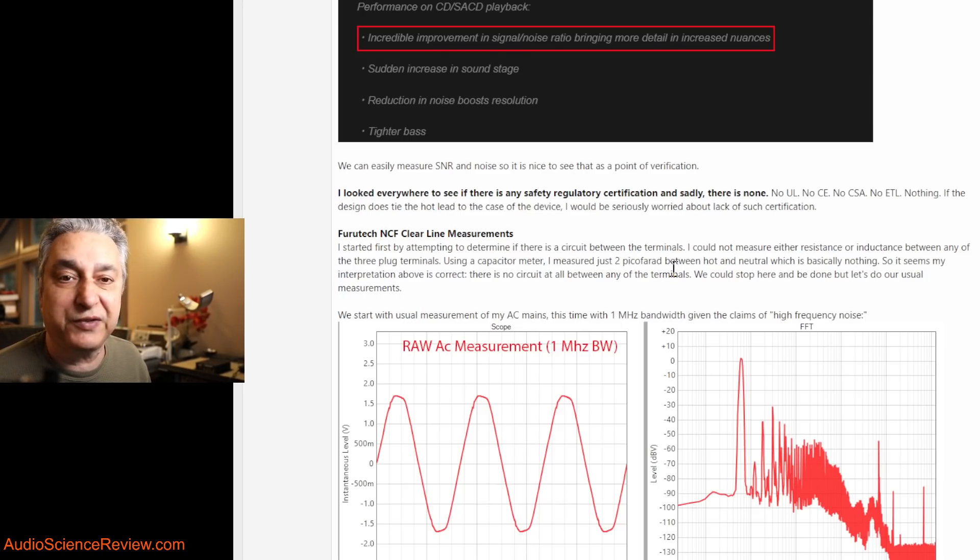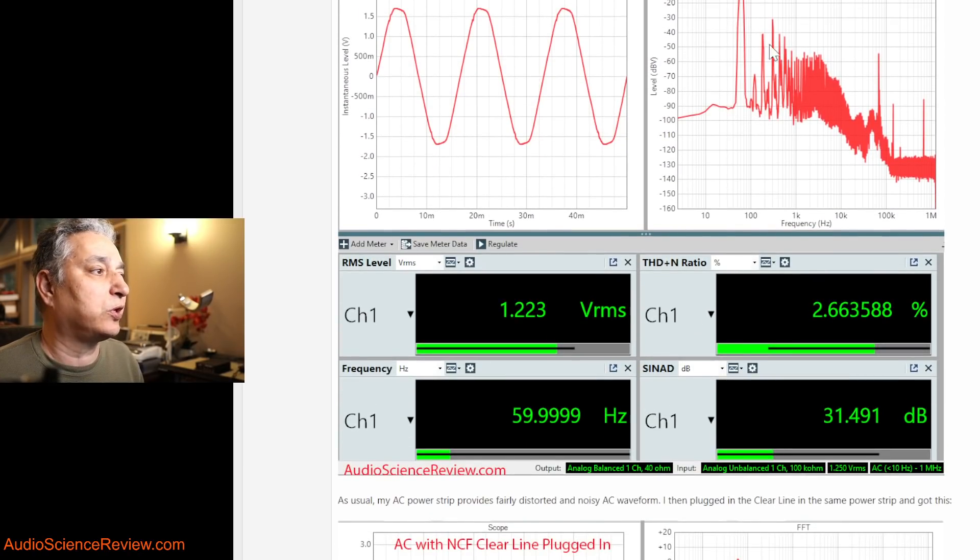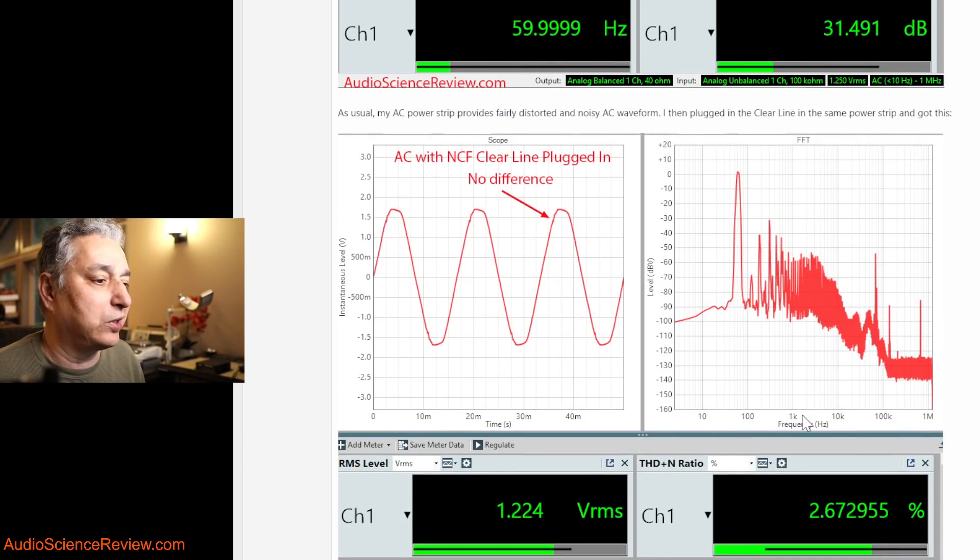It did measure a little bit of capacitance, two picofarads. Two picofarads is nothing. I could just breathe on the probe and I get two picofarads. So basically, these three pins are electrically completely isolated from each other. Therefore, nothing can be shunted and nothing can be taken from one pin and dumped onto the ground or what have you.